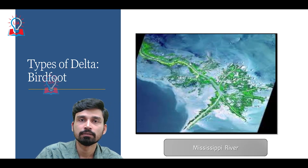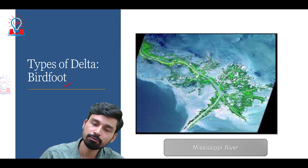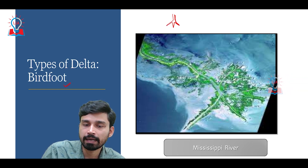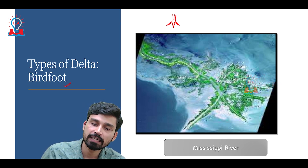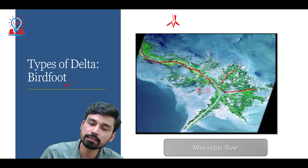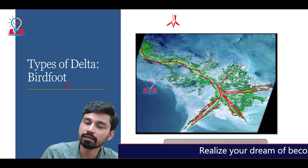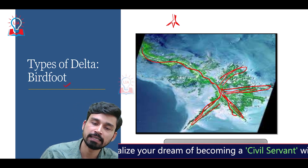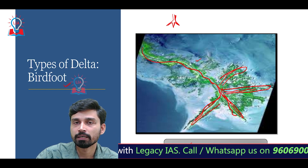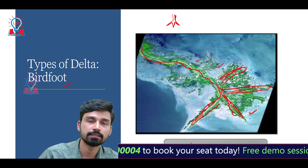The third type of delta is called a bird foot delta. It is called so because it resembles the claws of a bird — it has several different projections coming out, very similar to how the claws of a bird look. When the main river enters the sea, its water gets distributed into different distributaries, and when these distributaries deposit sediments in such a manner that there are many narrow elongated projections extending toward the sea, we call it a bird foot delta. The best example is the Mississippi River in the United States, entering the Gulf of Mexico, where the delta projections resemble the claws of a bird.